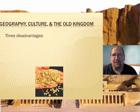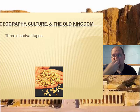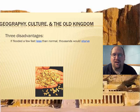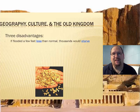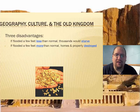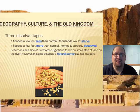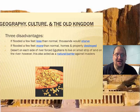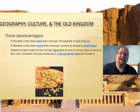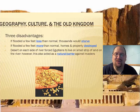There are three disadvantages, though. It all sounds like it was a perfect place to start a family, but not everything was perfect. First, if the river flooded a few feet too shallow, thousands of people would starve. If the river flooded a few feet higher than normal, homes and property would be destroyed. And third, though the desert provided great defense, it forced people to live close to the river, tucked in tightly together, because they needed it both for survival and as a natural barrier against invaders.